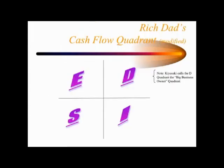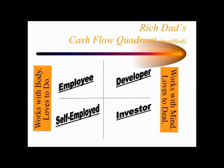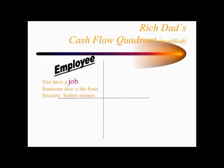You can easily identify people in the cash flow quadrant. We've modified this a little bit — Kiyosaki calls the D quadrant the big business owner quadrant, normally called the B, but in this example we're going to call it D. On the left hand side we have employees and self-employed — people that work with the body and love to do. On the right hand side are the developer and the investor, and they work with the mind and love to deal.